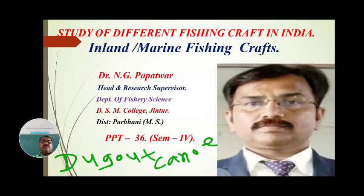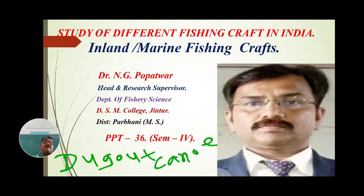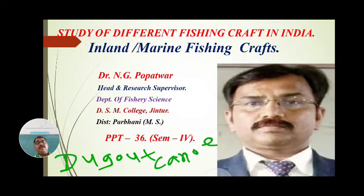In this period we study different types of fishing craft in India — inland and marine water fishing crafts. An important craft among these is the dugout canoe, which is used as both a marine water and inland water fishing craft.